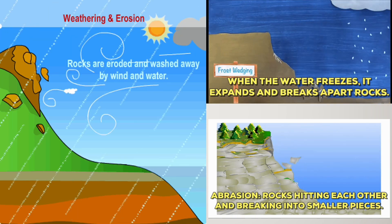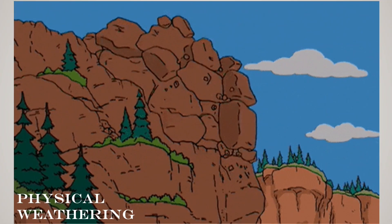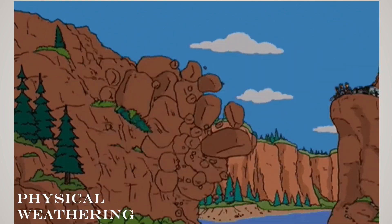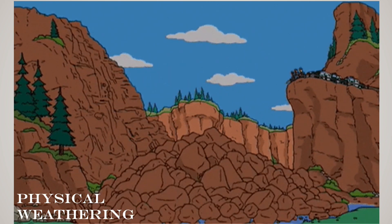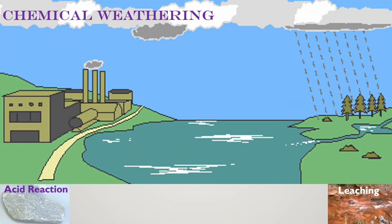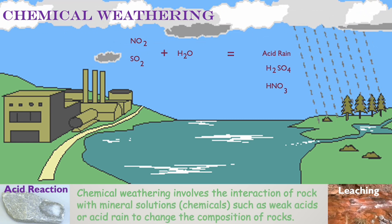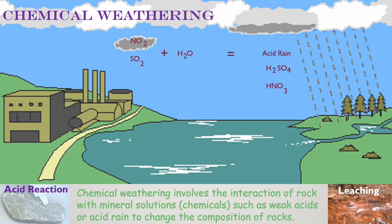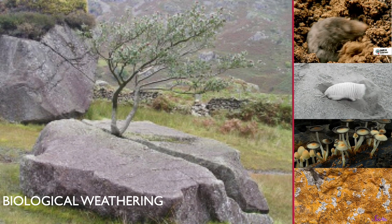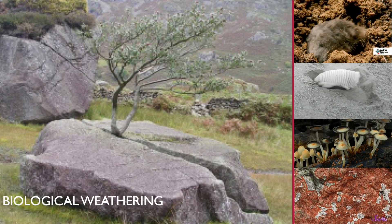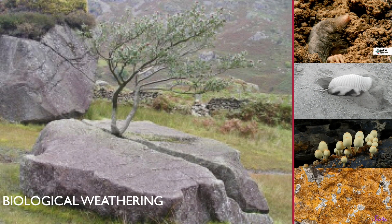There are three types of weathering: physical, chemical, and biological. Physical weathering occurs when rocks, minerals, and soil disintegrate without chemical change — for example, when rocks collide with other rocks, causing them to break into smaller pieces. Chemical weathering involves the interaction of rock with mineral solutions or chemicals such as weak acids or acid rain, changing the composition of rocks. Biological weathering occurs when plants break up rocks with roots or root exudates, and can also be caused by burrowing animals, fungi, and algae, also called lichens.